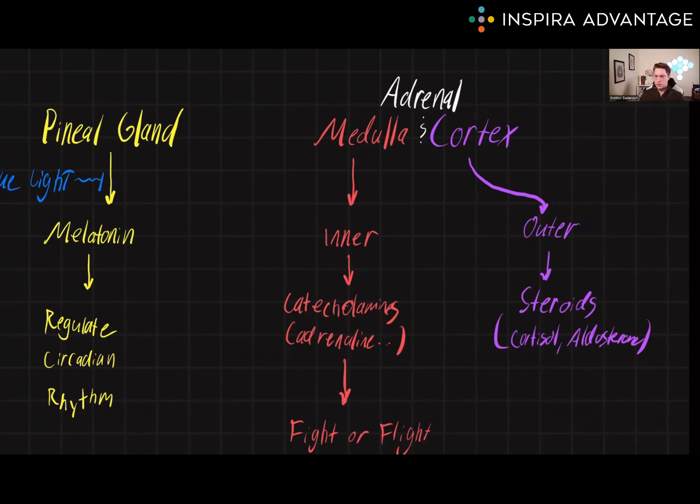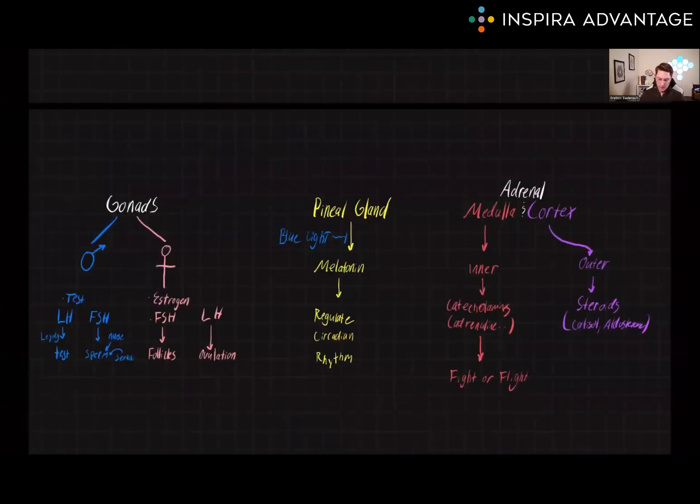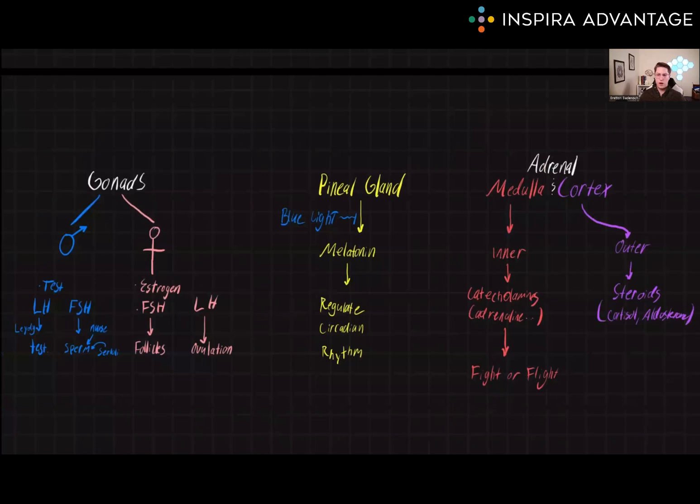It's important for MCAT students to understand these concepts because they're related to the function of the endocrine system, which plays a crucial role in maintaining body homeostasis and overall health. Knowledge of the function and regulation of the gonads, pineal gland, and adrenal gland is essential for the diagnosis and management of endocrine disorders and essential for you to do well on the MCAT.